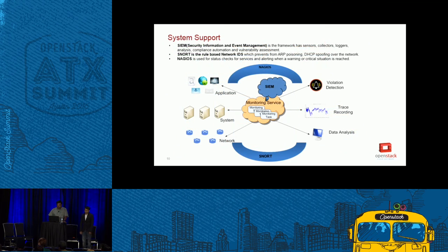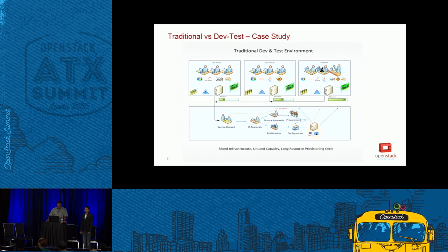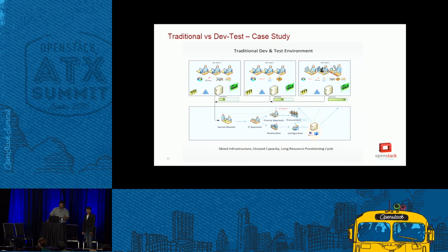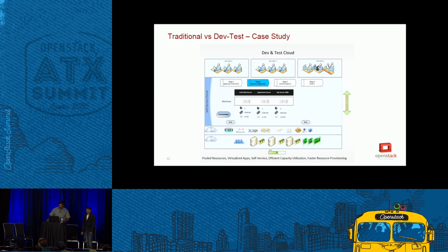For the case study comparison: in an enterprise setup, a service request for procurement goes through all approvals before a new team is formed and new hardware is brought in — a time-consuming process. With an OpenStack-based DevTest environment, everything is orchestrated up to the user integration layer. All that is given to the user is a web UI where they select a few options and provision a VM with just a few clicks.